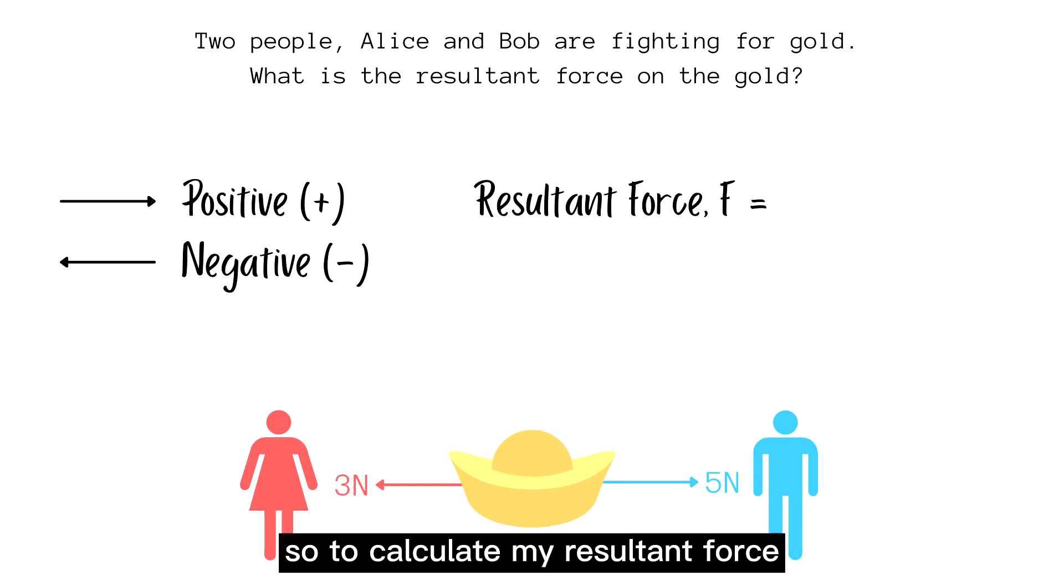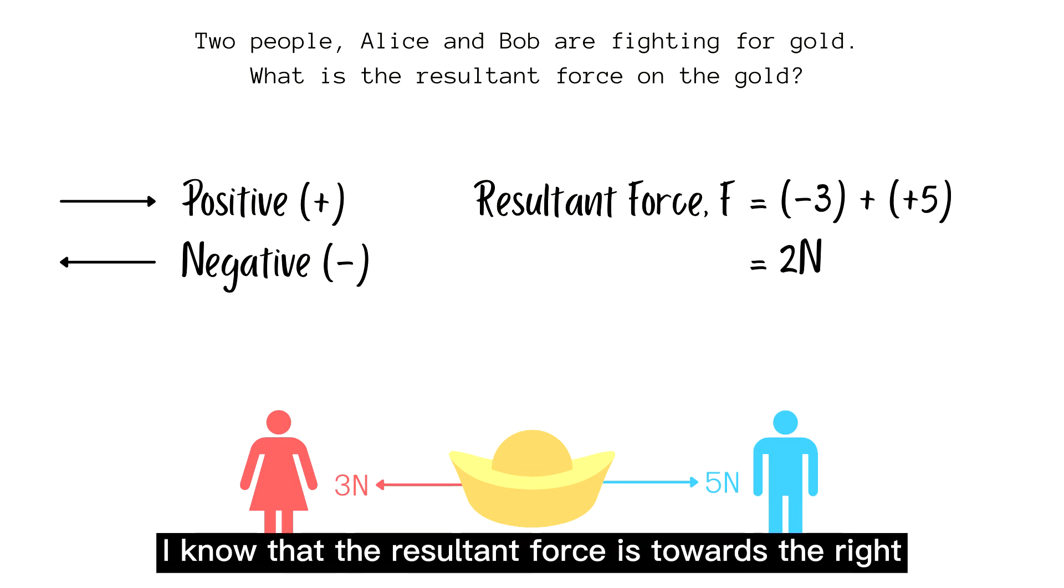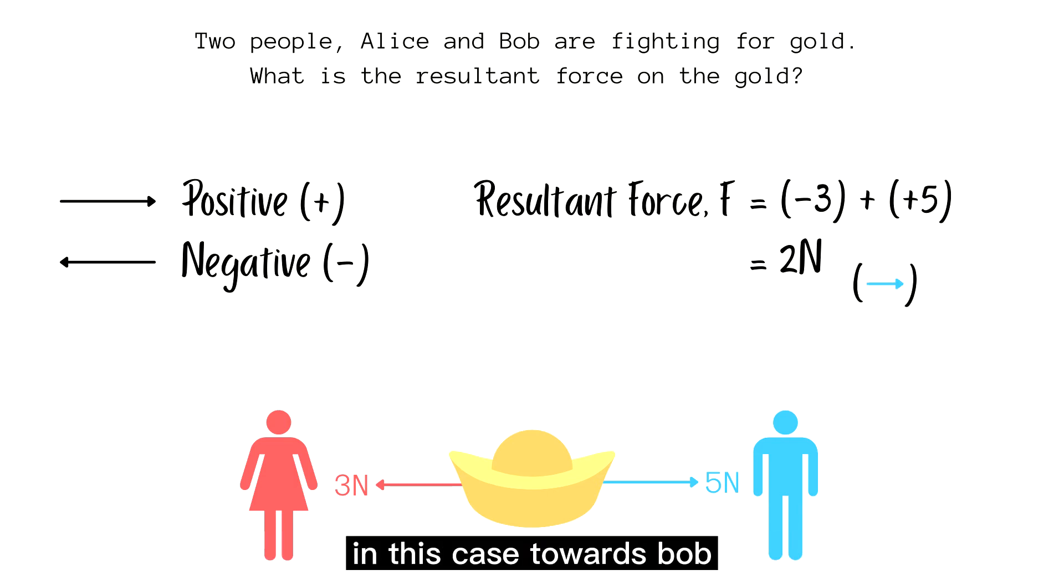So to calculate my resultant force, I would just add up Alice's negative 3 Newtons to the left and Bob's positive 5 Newtons which is to the right and I'll get a resultant force of 2 Newtons. And since my answer is a positive number, I know that the resultant force is towards the right. In this case, towards Bob.